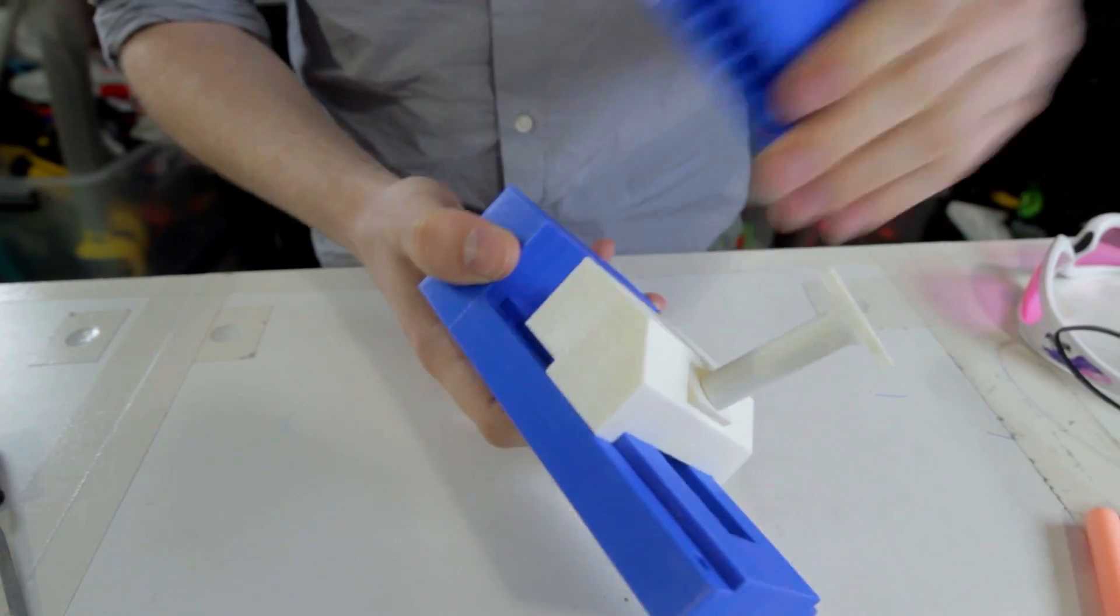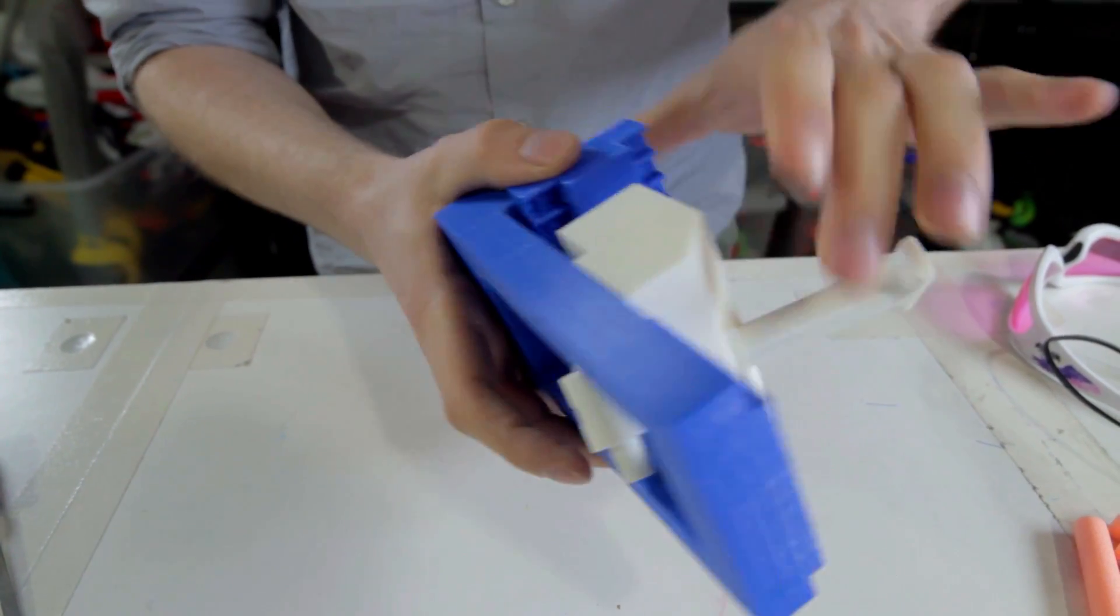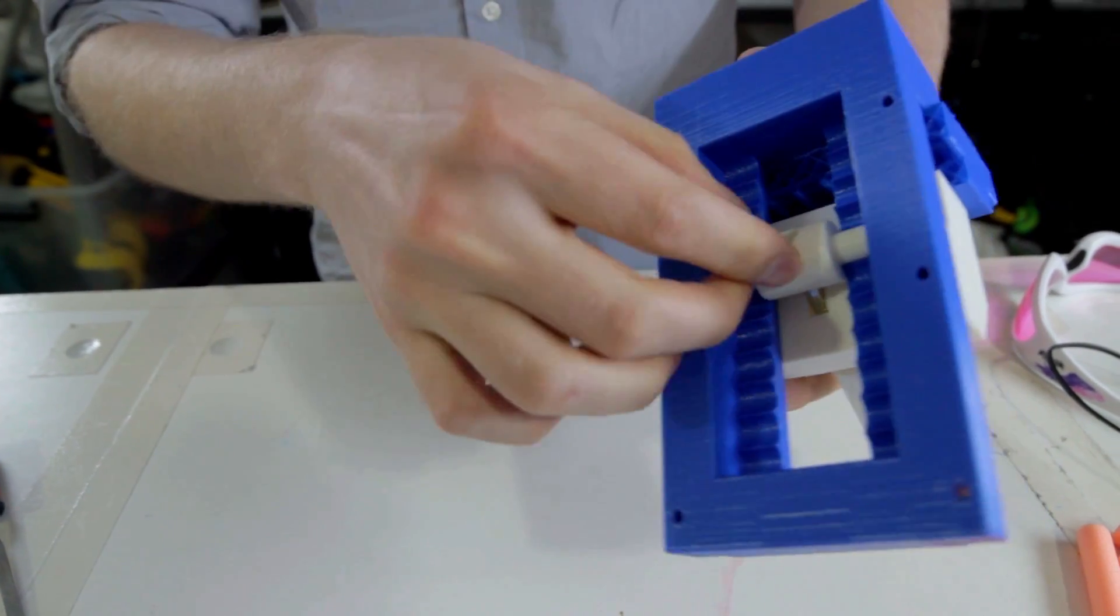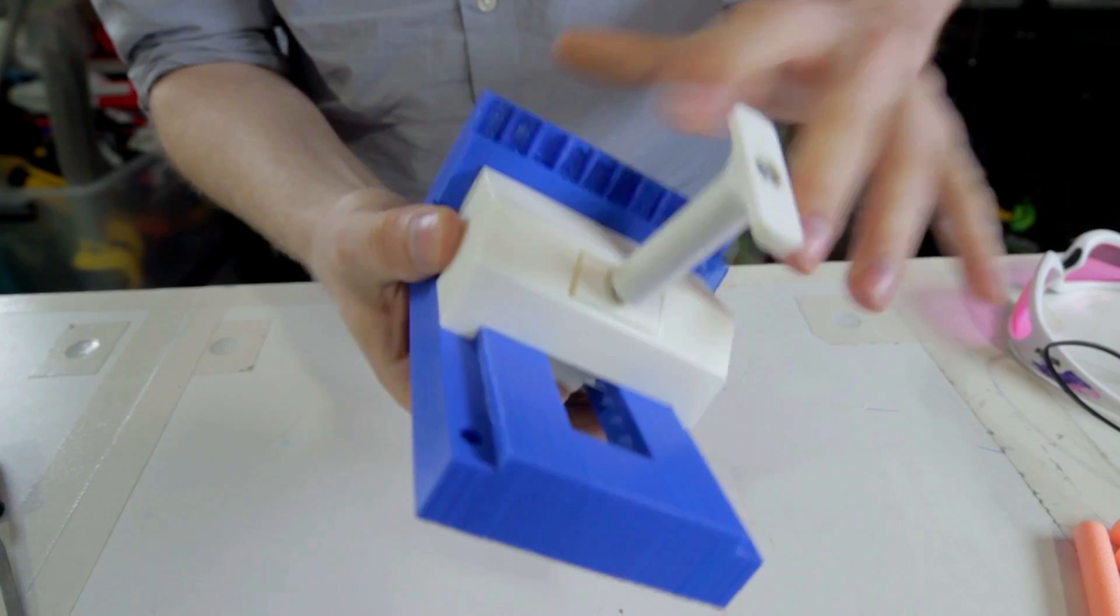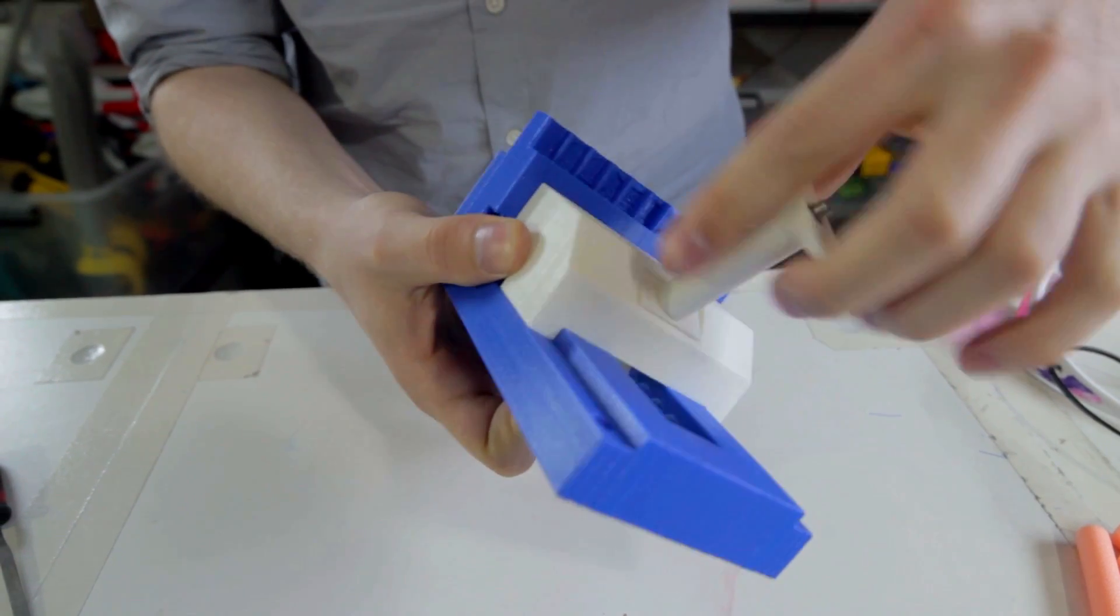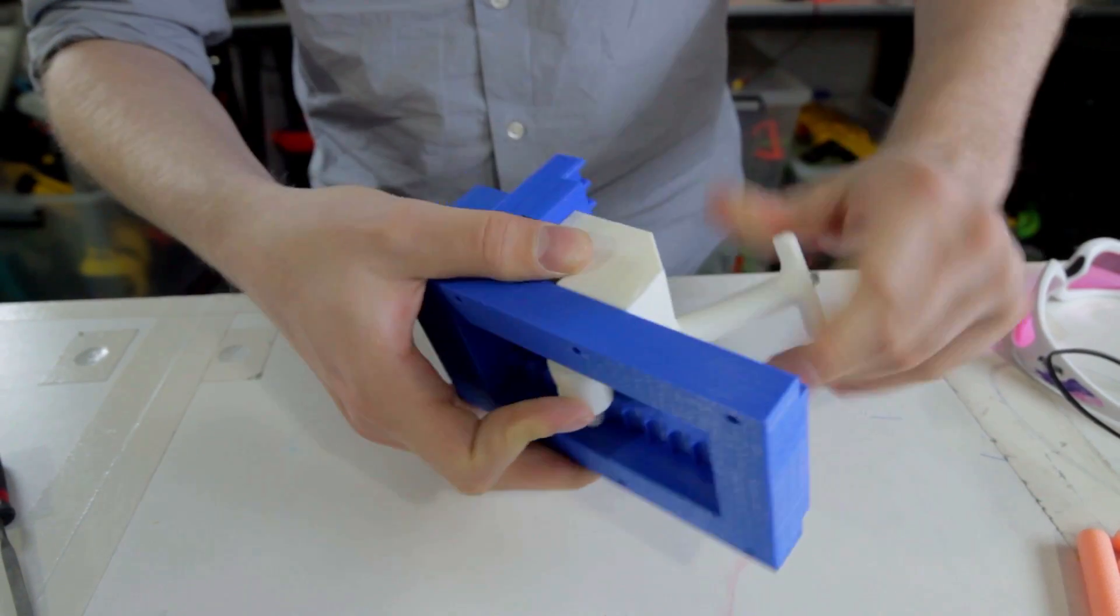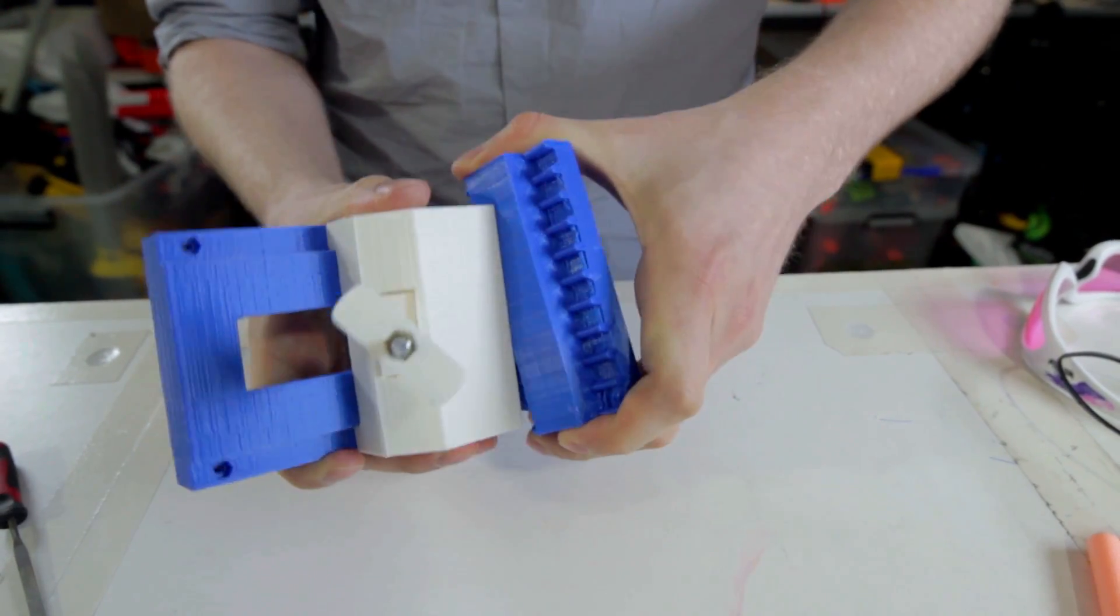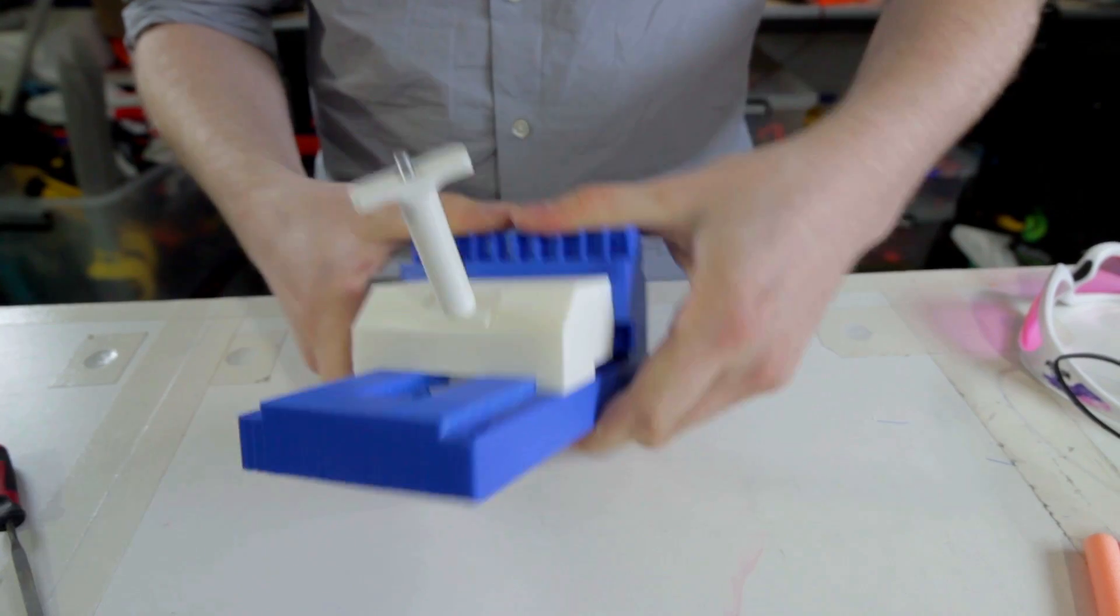And then what we can do... let's clamp down onto this. Just put that in place, line it up, find the nearest hooky thing. And then when we tighten this, that will apply the clamping force to that face.